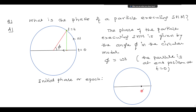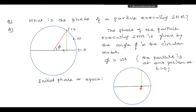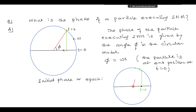The oscillating particle is here and you have started your stopwatch at this instant. That means for the parent particle and the oscillating particle both, this is t equal to 0. Then a little after, at t equal to t, the particle has gone to this position. Connect the particle to the mid position — this angle is called the initial phase or epoch of the particle.